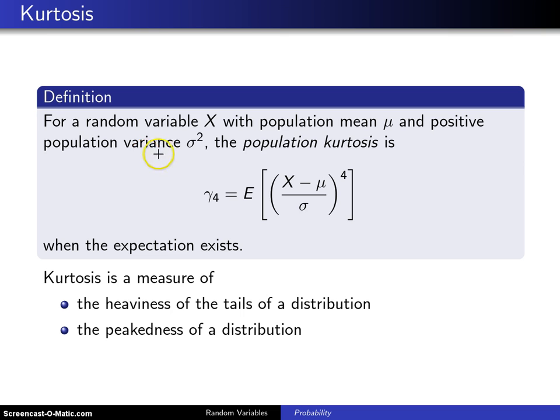The positive population variance is to avoid dividing by zero. The population kurtosis is, and you can see here in the definition, here is that standardized random variable all over again.